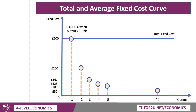So just plotting those points together in a little curve, we get the average fixed cost curve. And you can see that average fixed cost, or AFC, must fall as output increases. This is a significant curve to know about in terms of your economics revision.